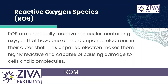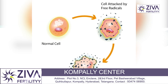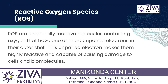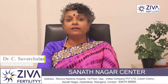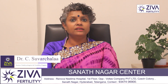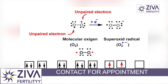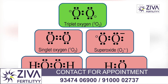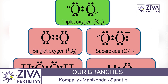Reactive oxygen species, also called ROS, are chemically reactive molecules containing oxygen that have one or more unpaired electrons in their outer shell. This unpaired electron makes them highly reactive and capable of causing damage to cells and biomolecules. Common examples include superoxide anion, hydrogen peroxide, hydroxyl radical, and singlet O2.